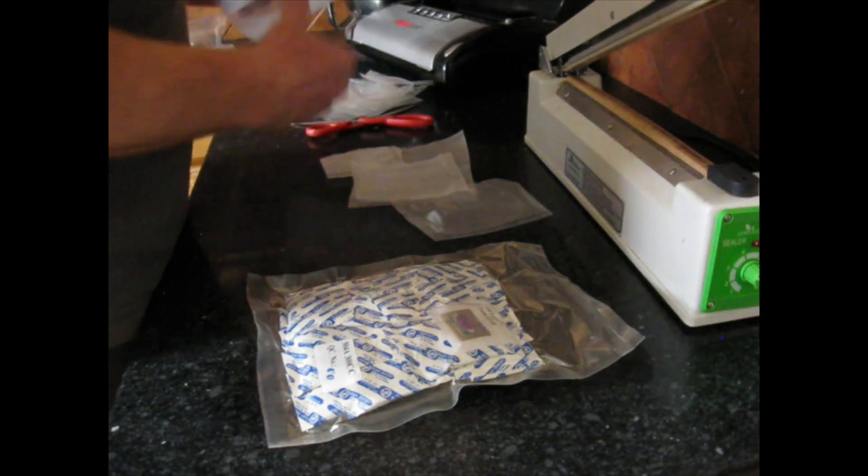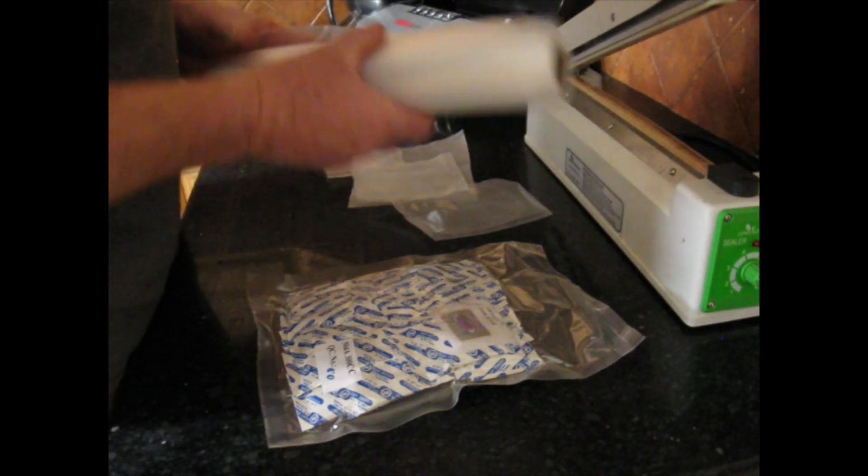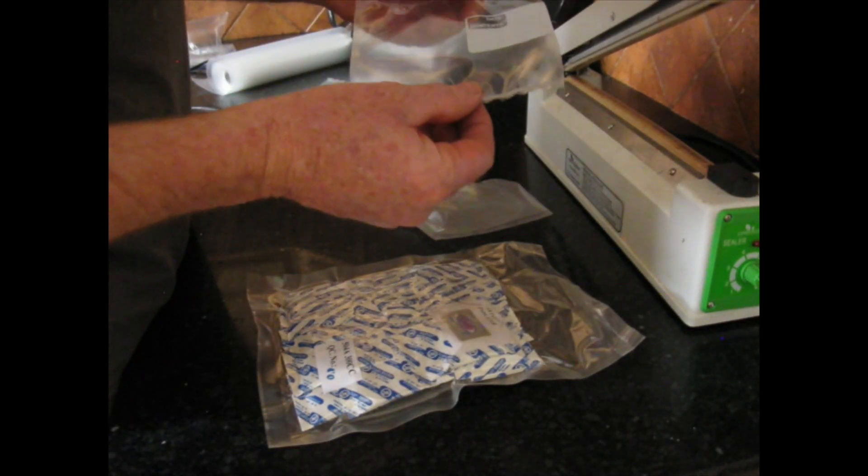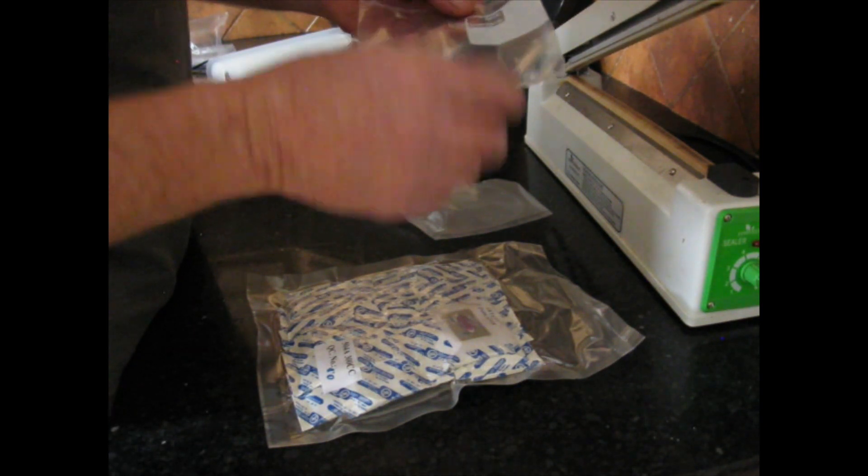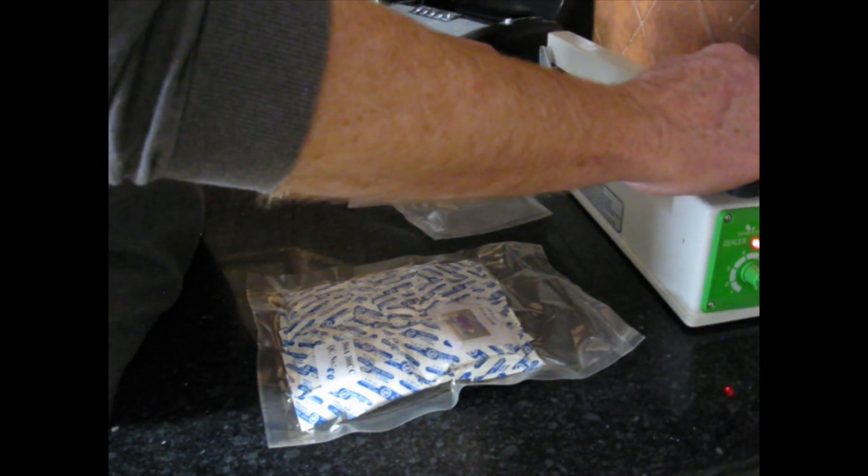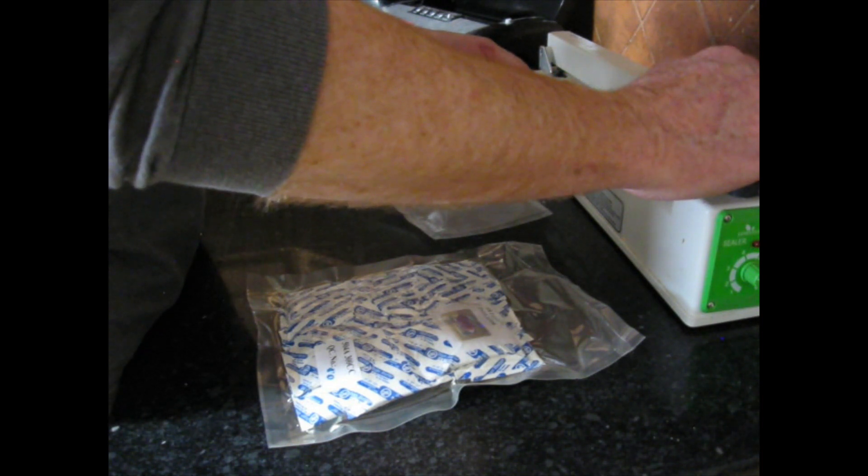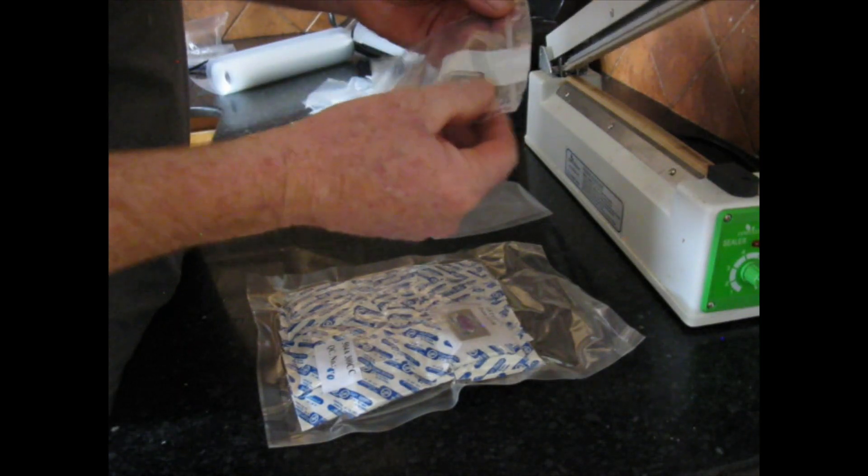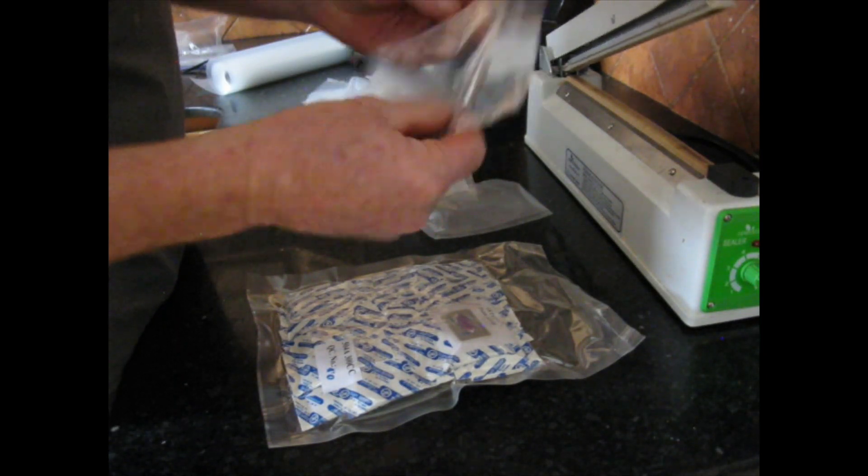Now, if you don't have this material, you can also use the same plastic from a Ziploc bag. You'll have to experiment on what setting works best to seal the sides and the ends. But once you find that, once you find that setting, you can use the same plastic from a Ziploc bag. And I also use that.